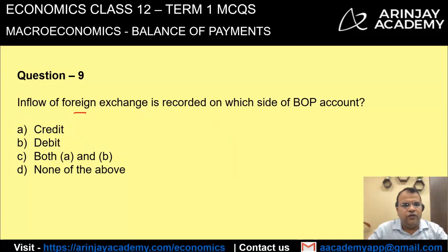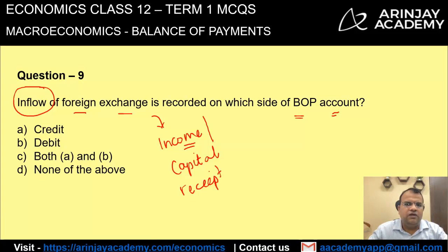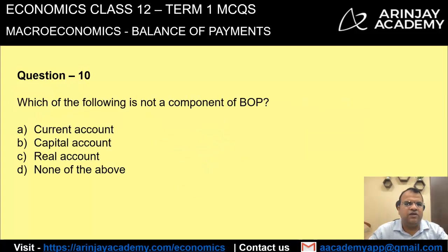Inflow of foreign exchange is recorded on which side of the balance of payment account? When there is an inflow — when you receive money — it is income or a capital receipt. As per the double entry accounting system, both these items are credited. Therefore, the correct answer is A: it is recorded on the credit side of the balance of payment account.